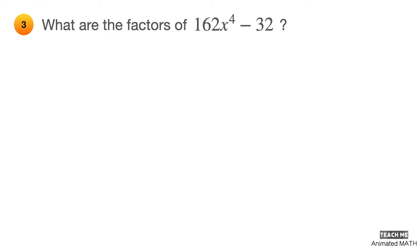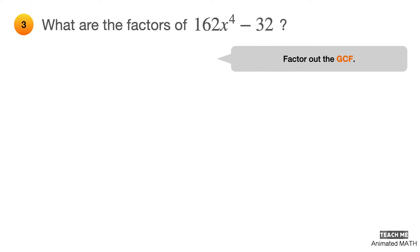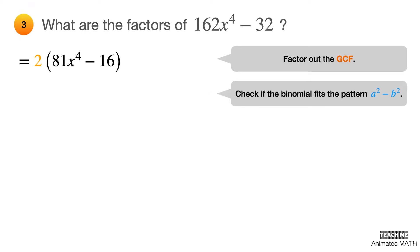Let's try something a bit more challenging. At first inspection, it doesn't look like any of the two terms are perfect squares. But since they seem to have a common factor, let's factor out its GCF, which is the integer 2. Both terms now look like perfect squares: 81x⁴ is equal to the square of 9x², and 16 is equal to 4 squared.